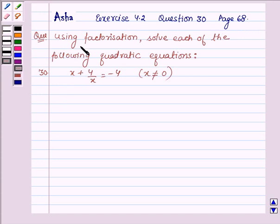The question says, using factorization, solve each of the following quadratic equations. The 30th part is x plus 4 upon x equals minus 4, where x is not equal to 0.